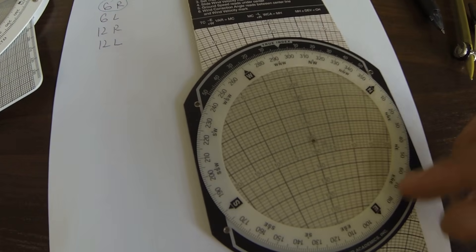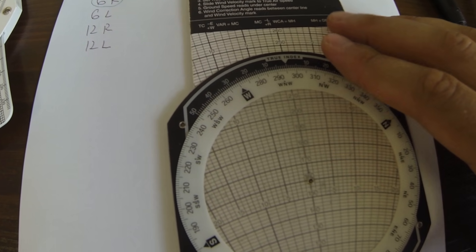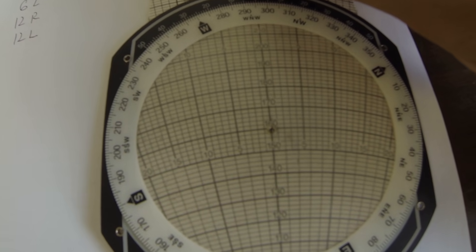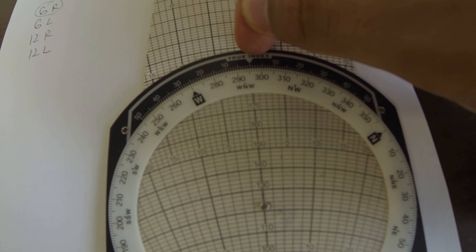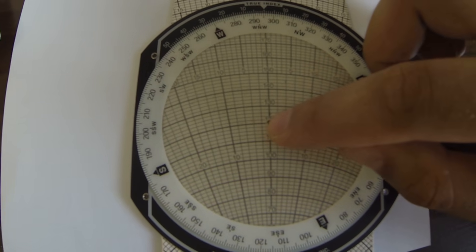And let's use the E6B as well because some people they might not have the CRP5. So again, true airspeed we align it and we put it at 120. There we go, 120 right in the middle.